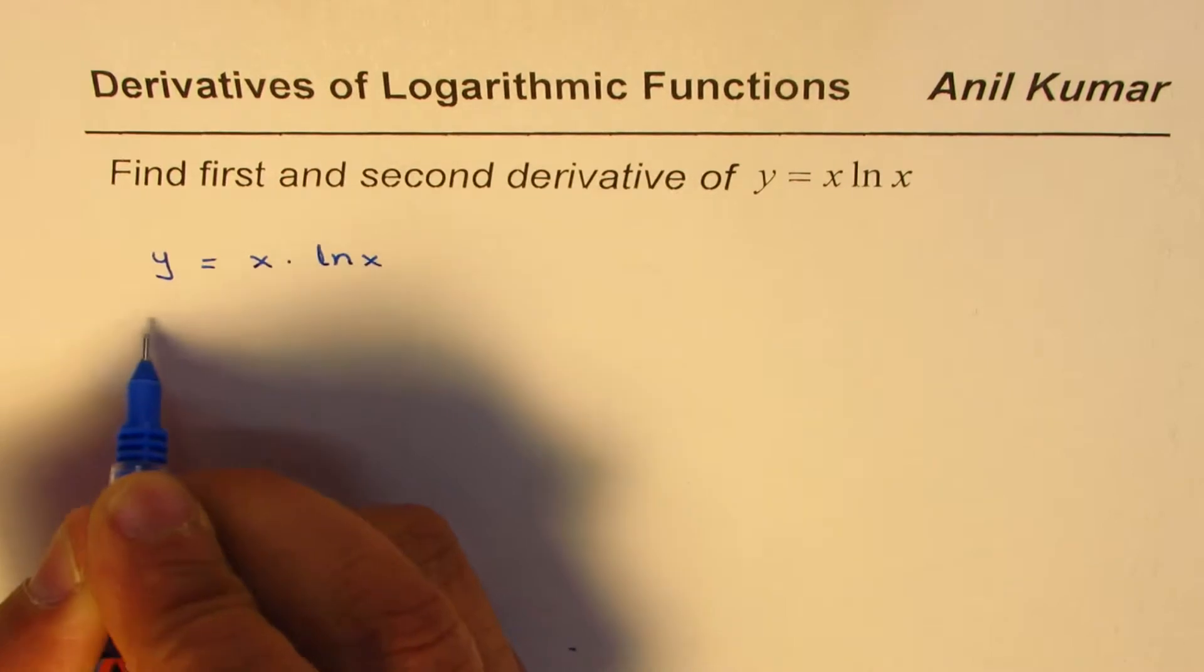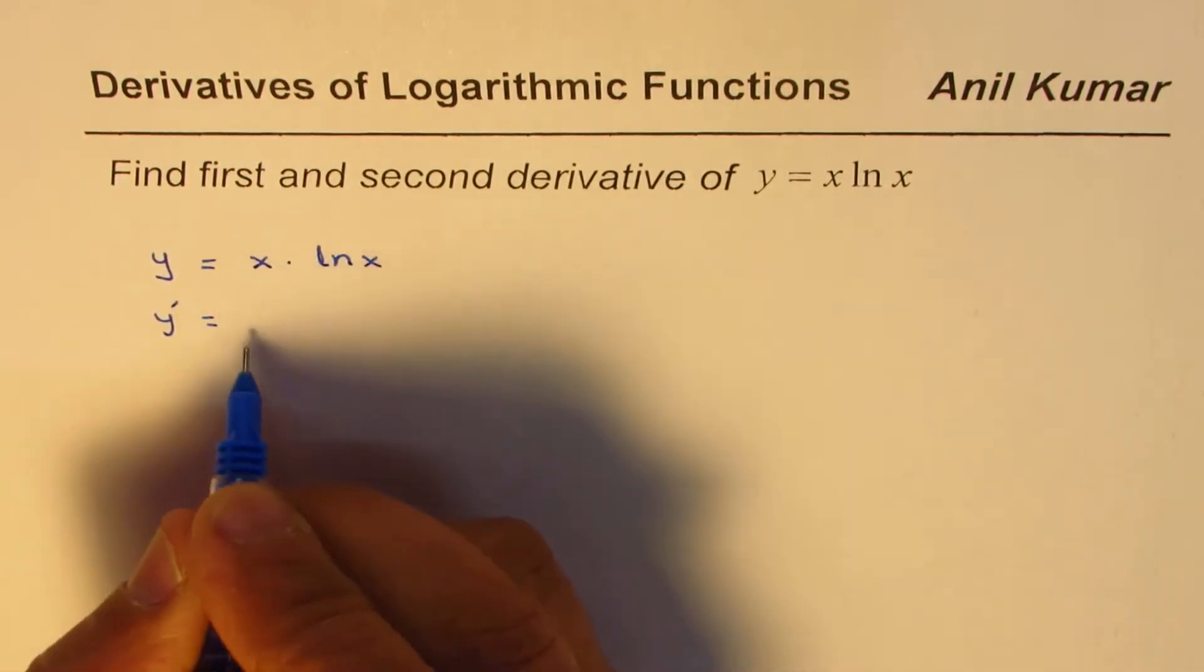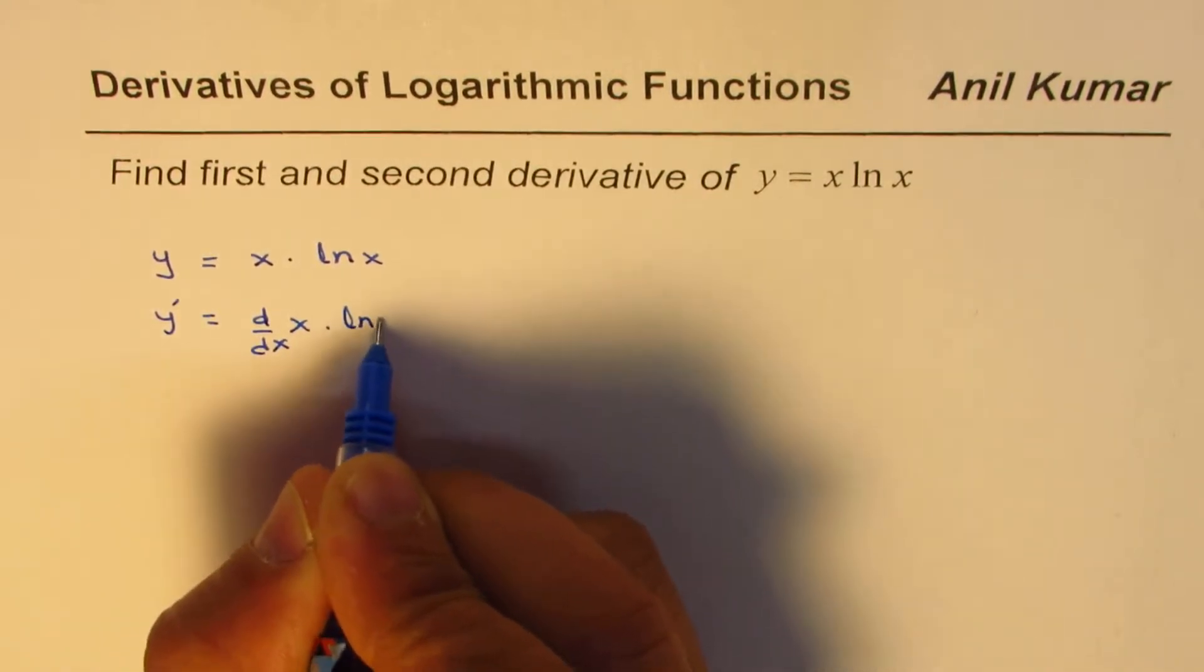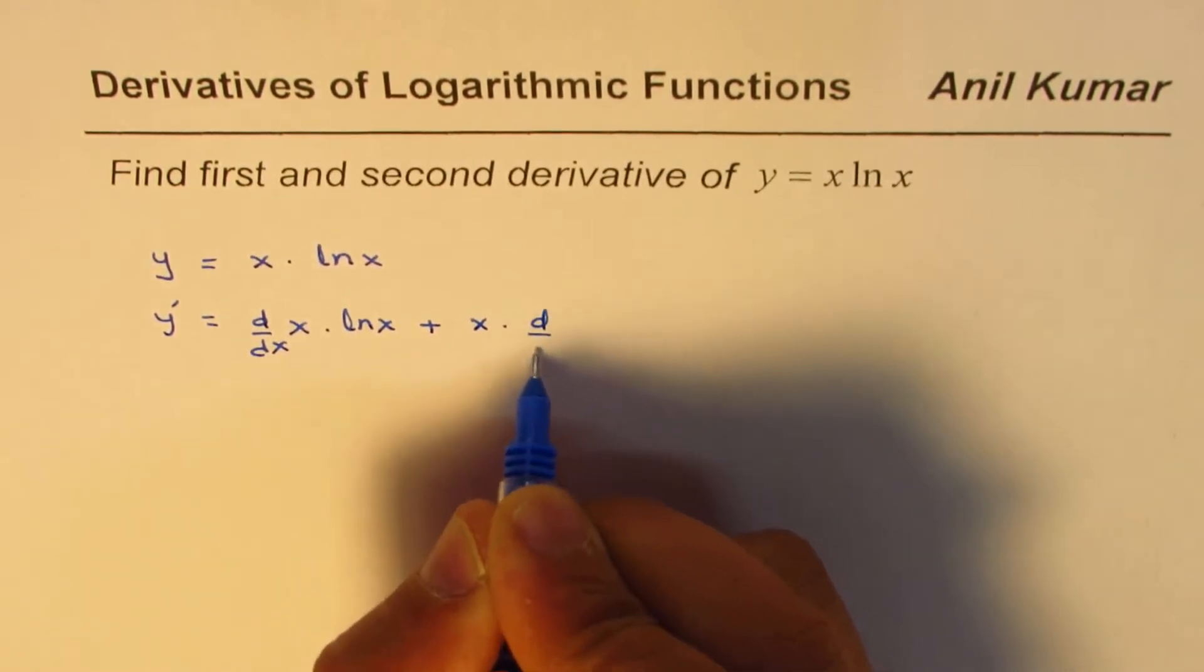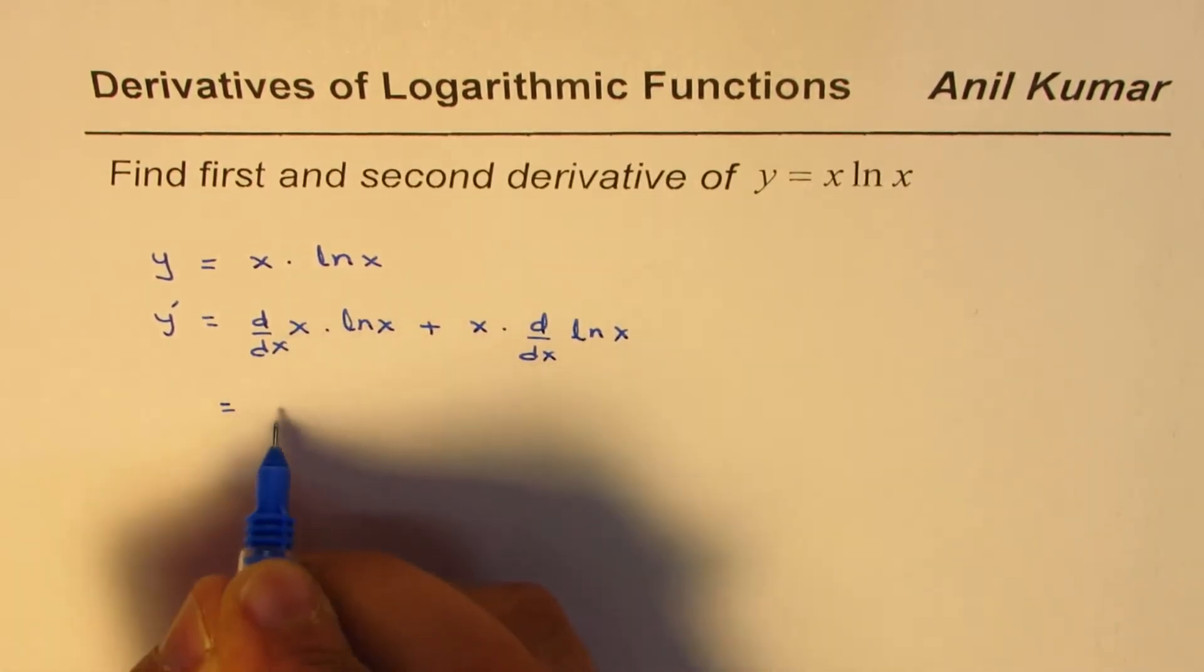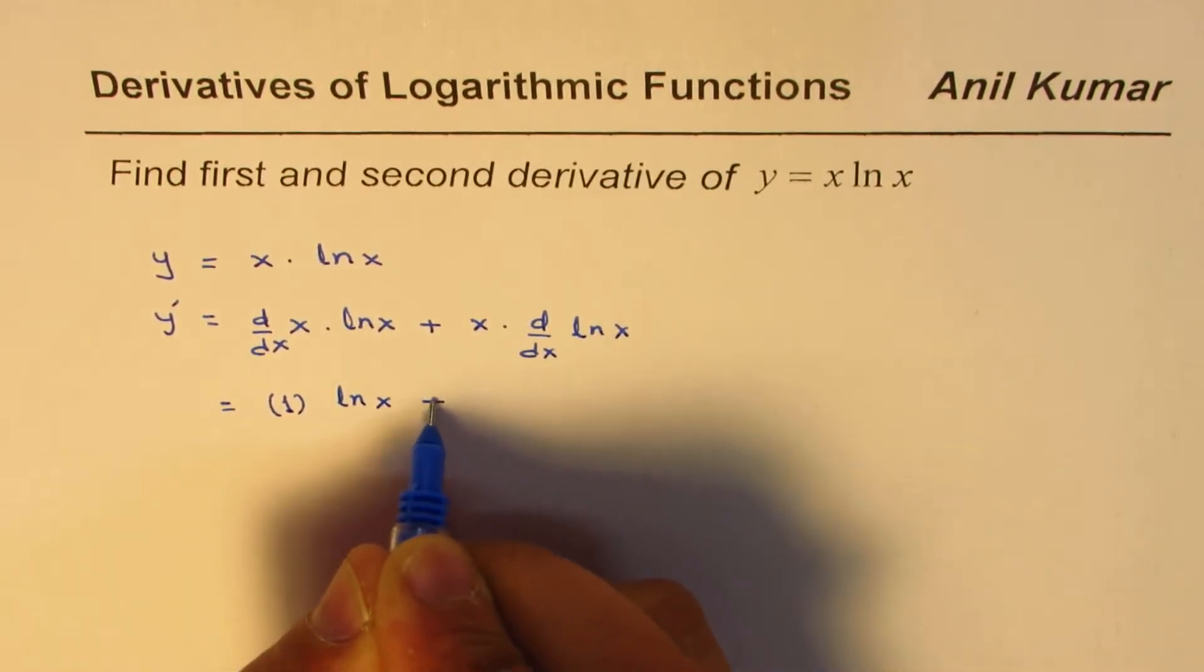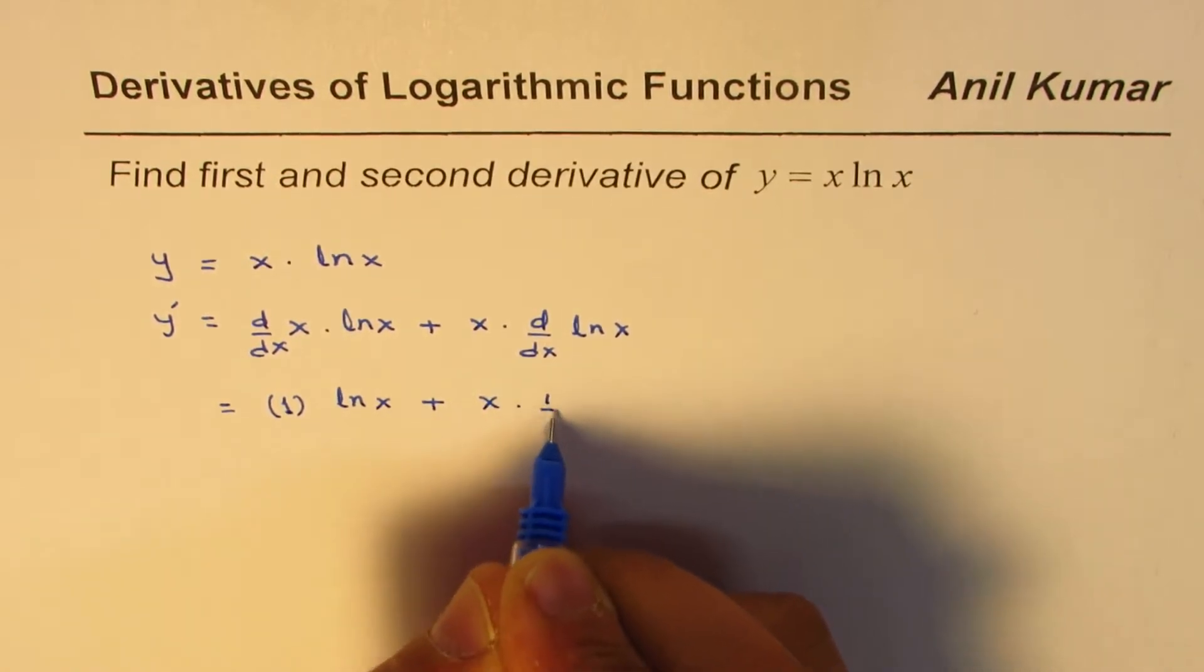So y dash will be equals to derivative of x. So this is d dx, you could write as x times ln x plus x times derivative of ln x. So that gives you derivative of x is 1, so it is 1 times ln x plus x times derivative of ln x is 1 over x.